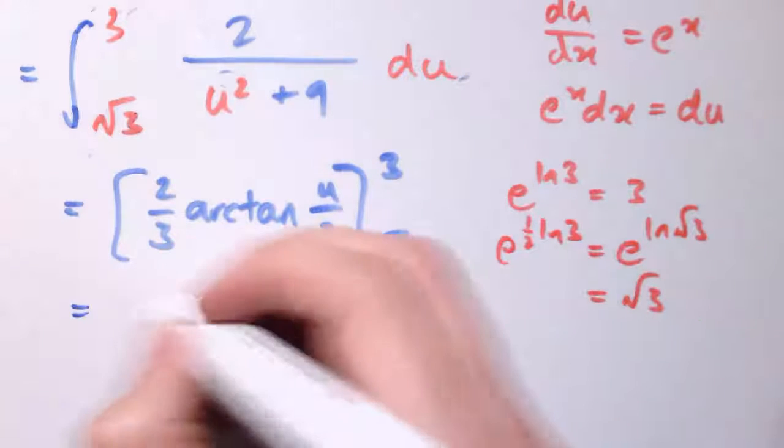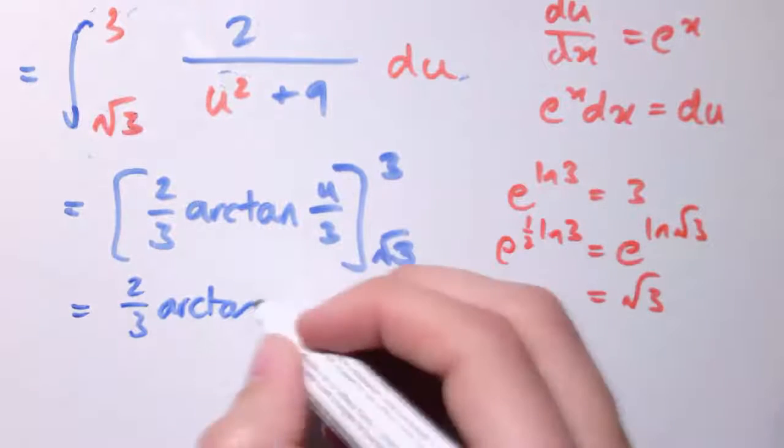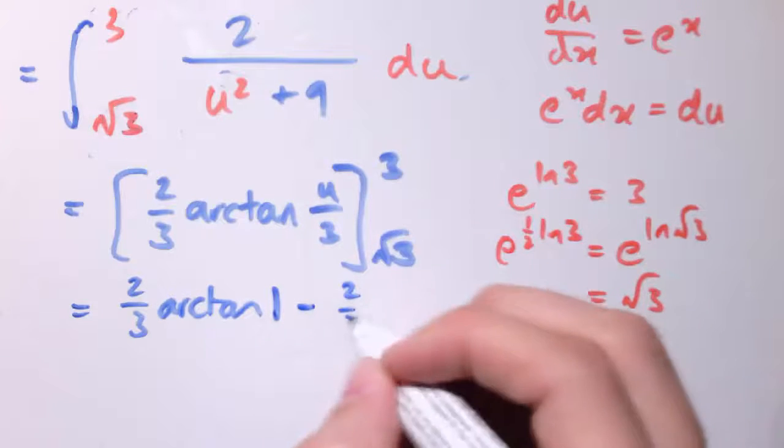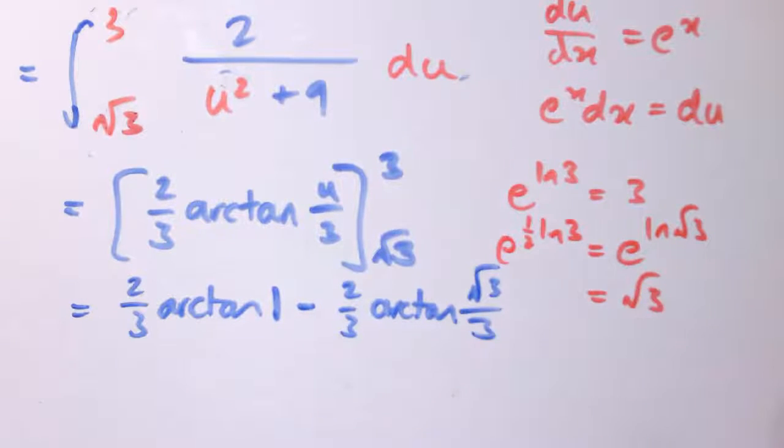And to finish off, we just need to plug in the numbers so I get 2/3 arctan(1) minus 2/3 arctan(√3/3).